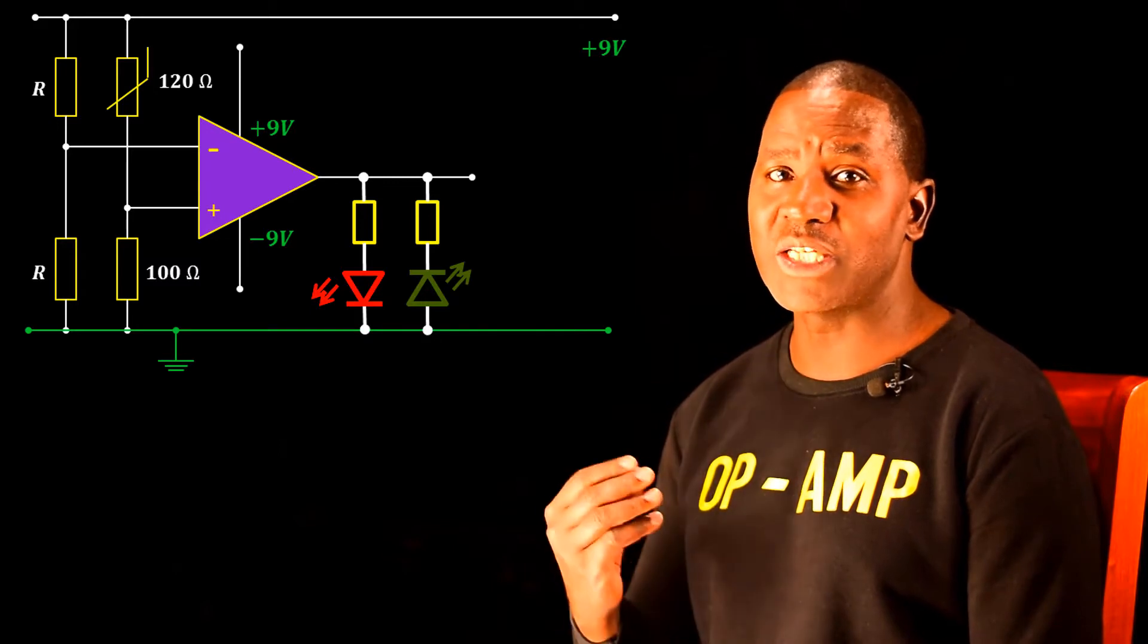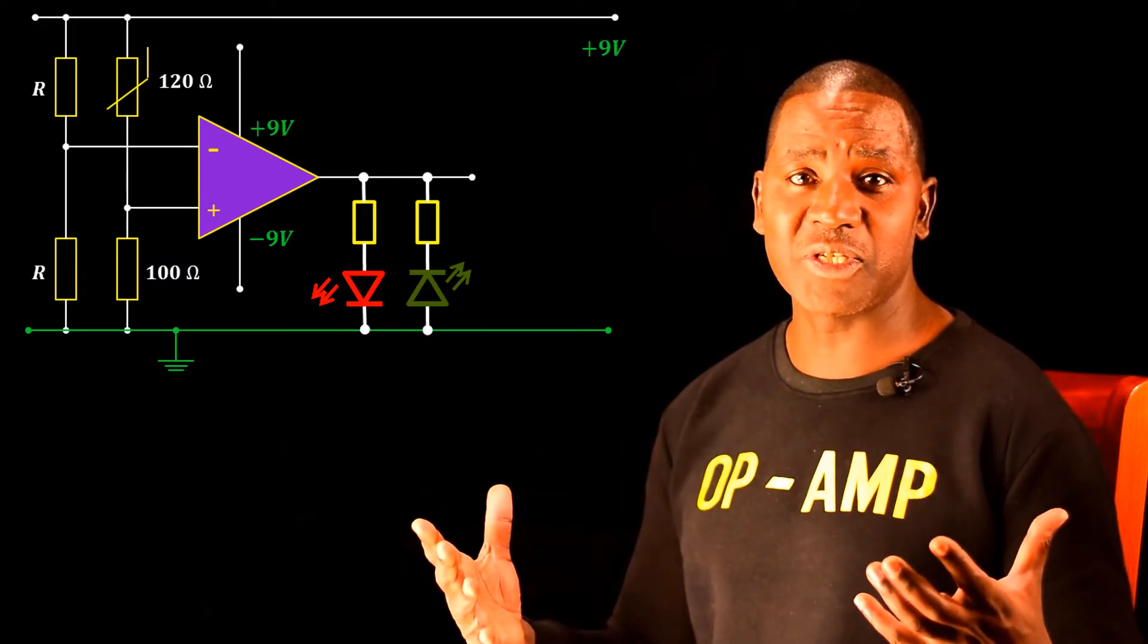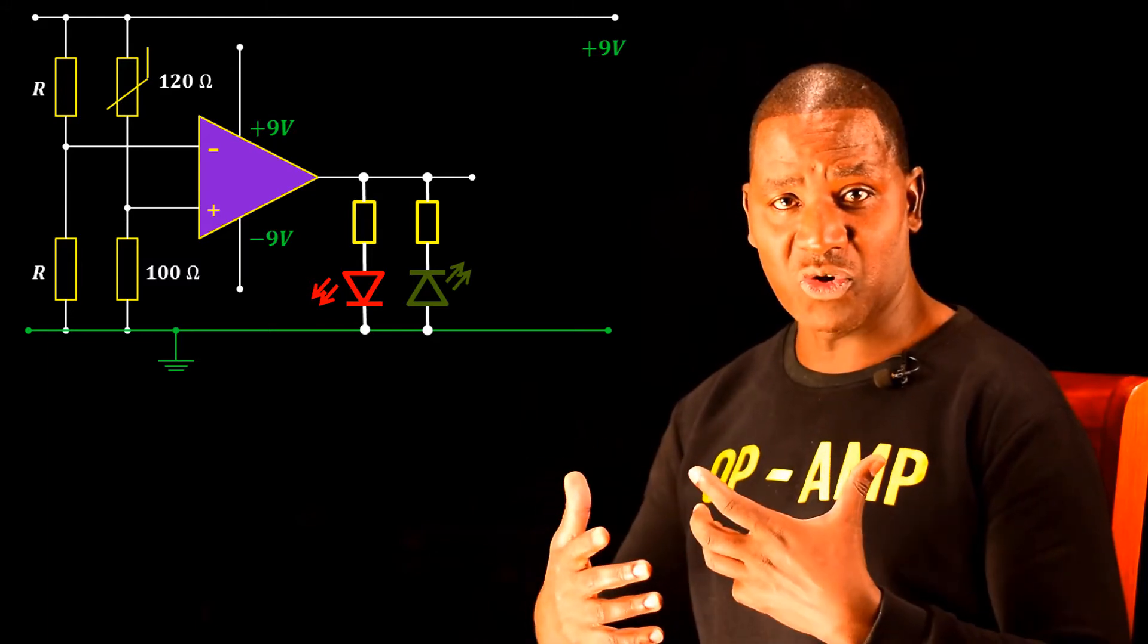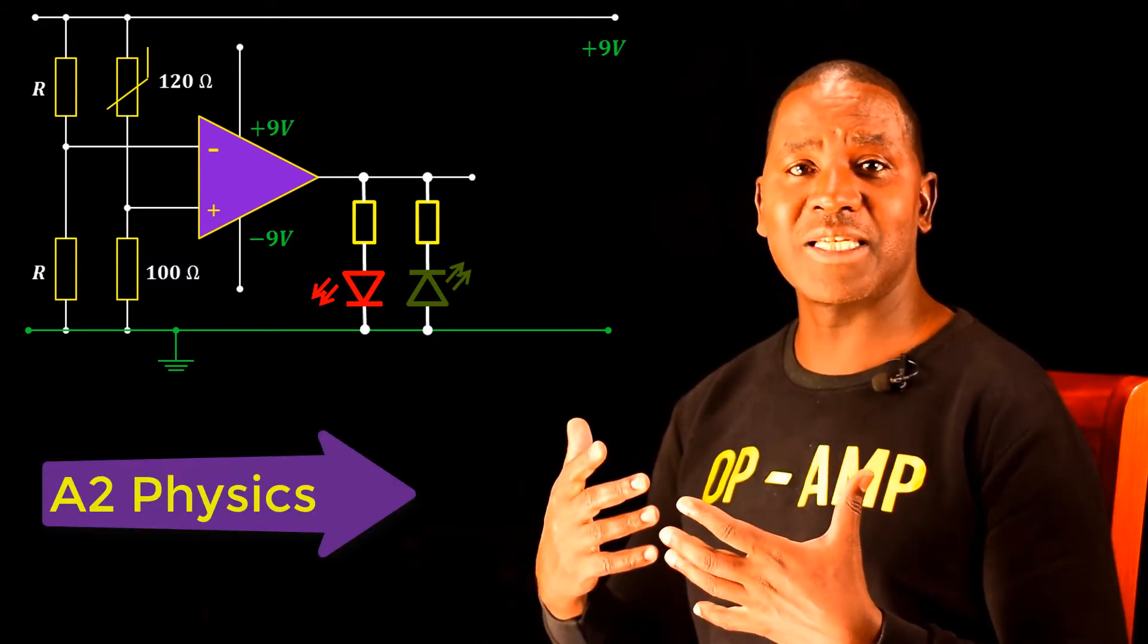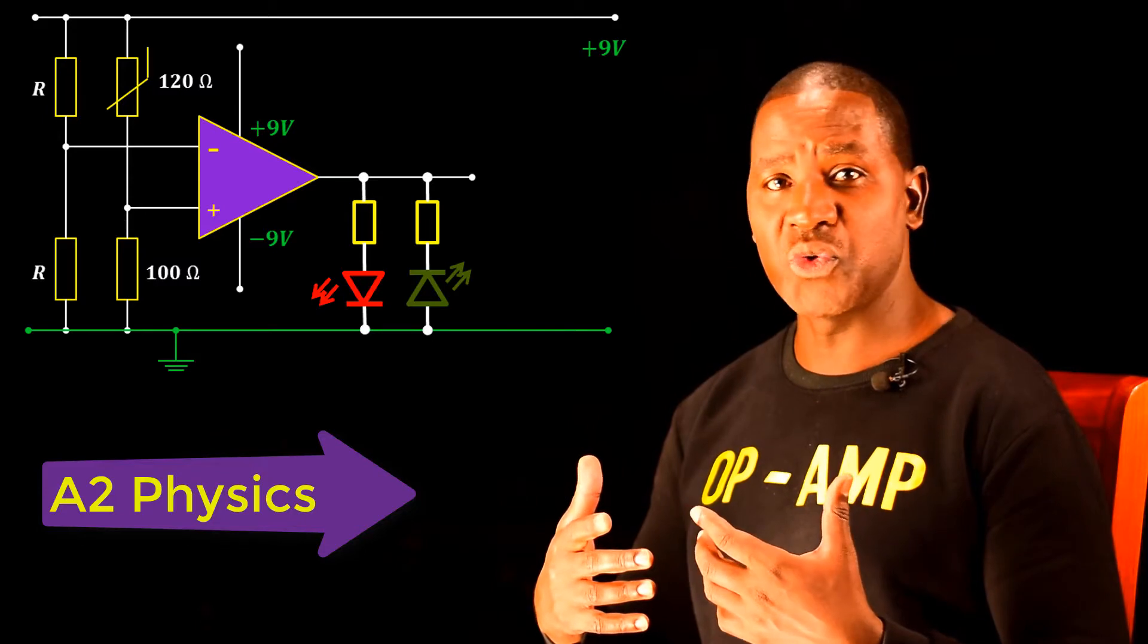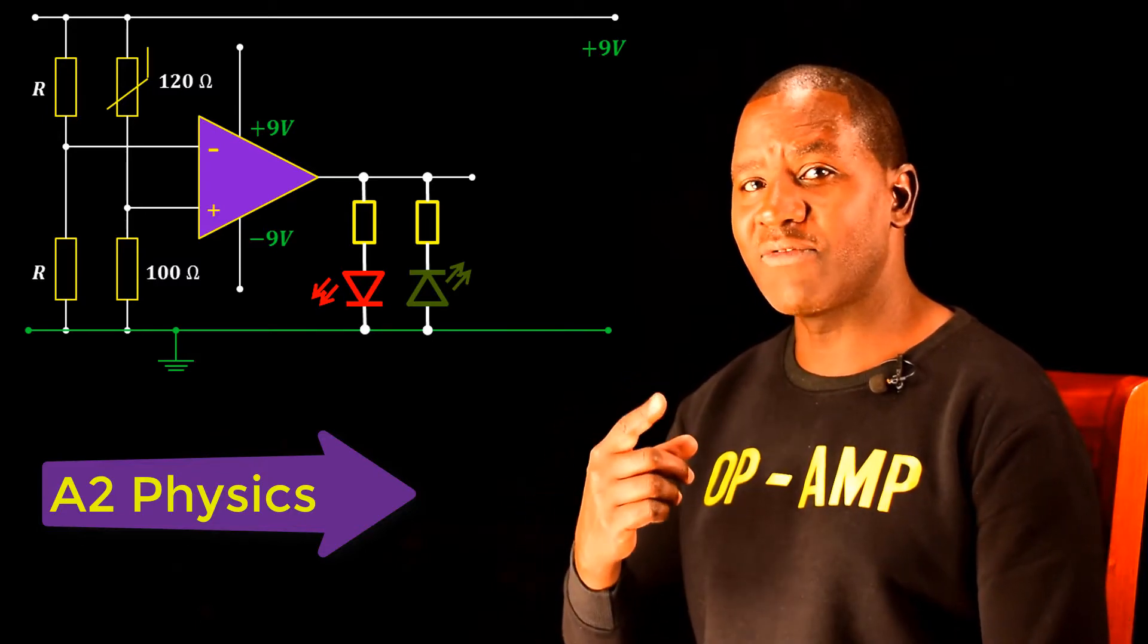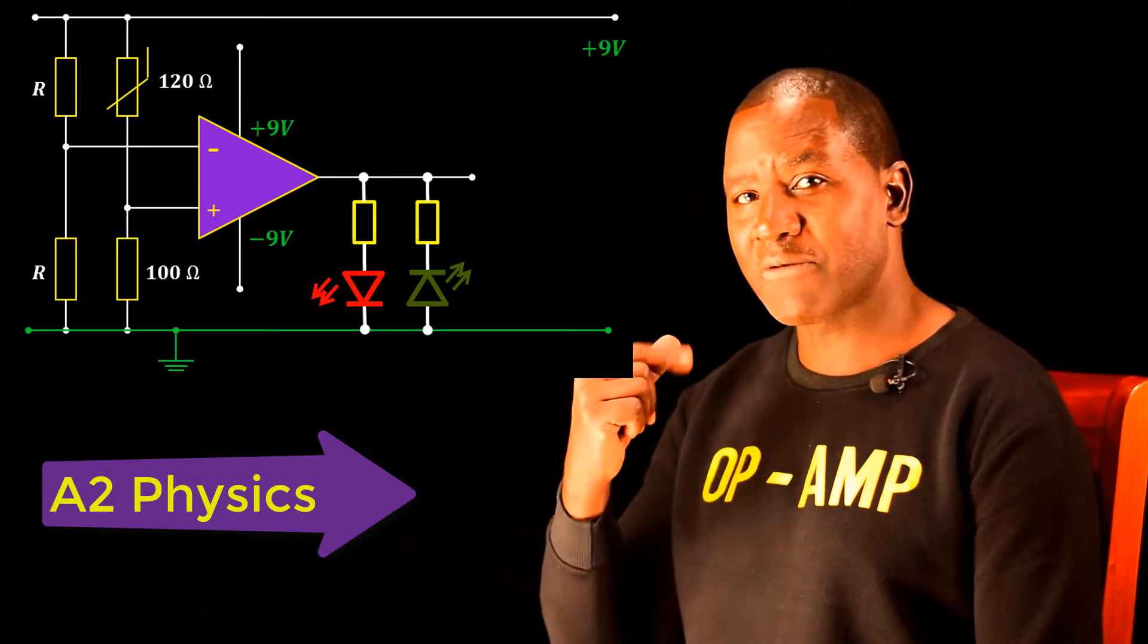And before they can decode what is happening here, time has elapsed, and they really don't have enough time to practice. Because you know the advanced level physics syllabus is for two years, and the A2 section is just one year, and there are very many topics that you have got to cover.